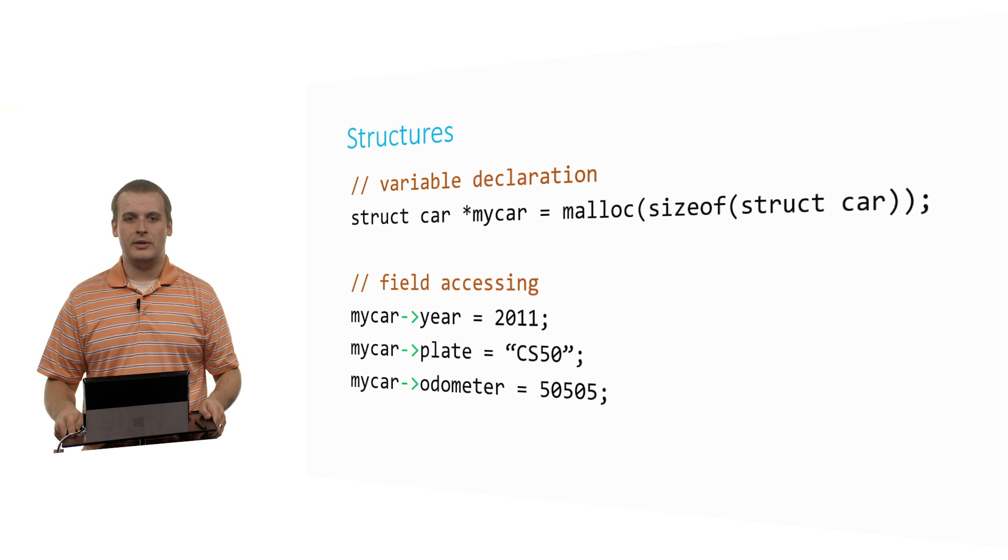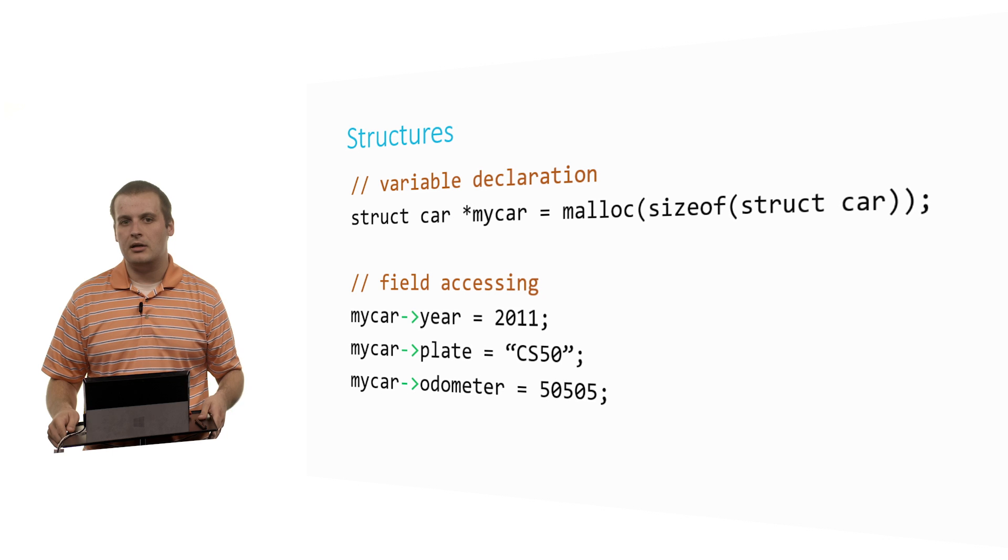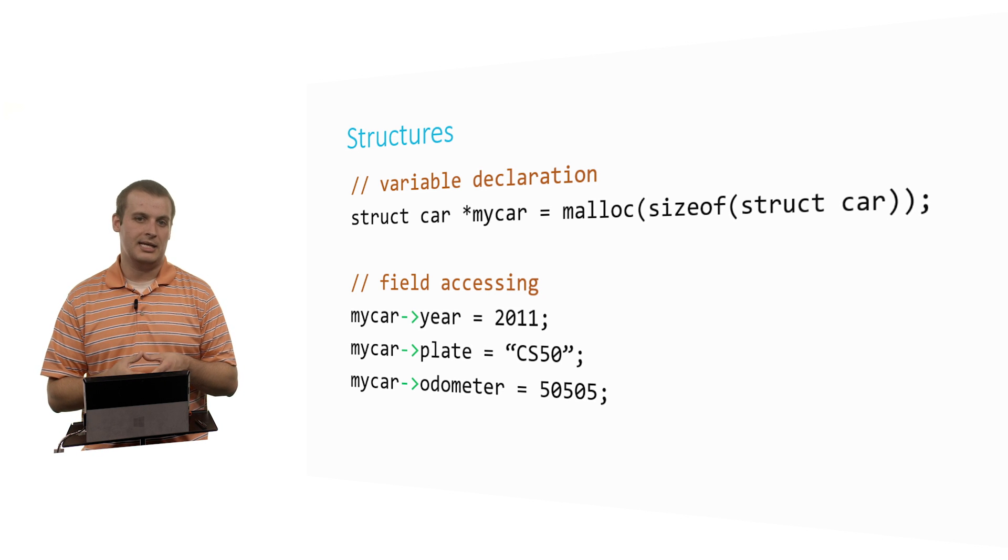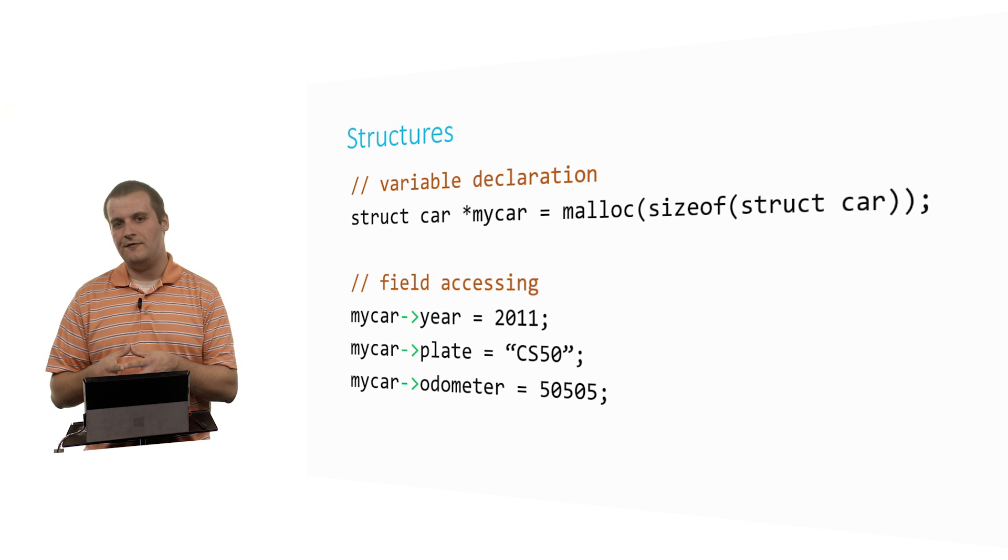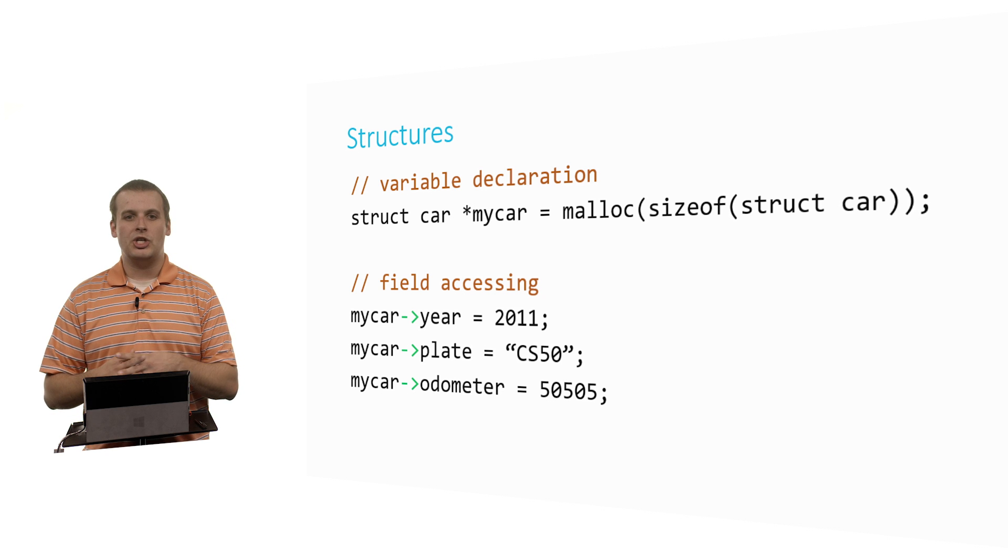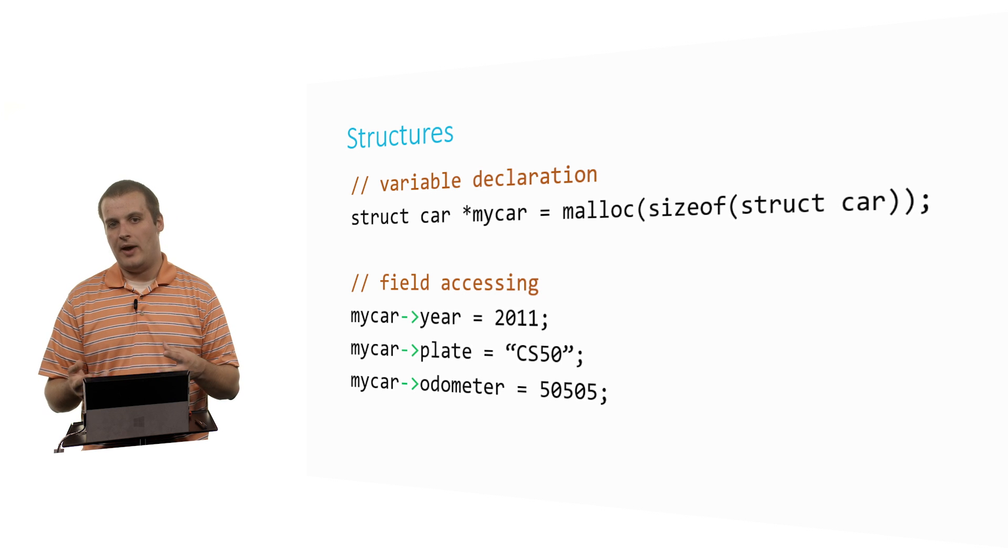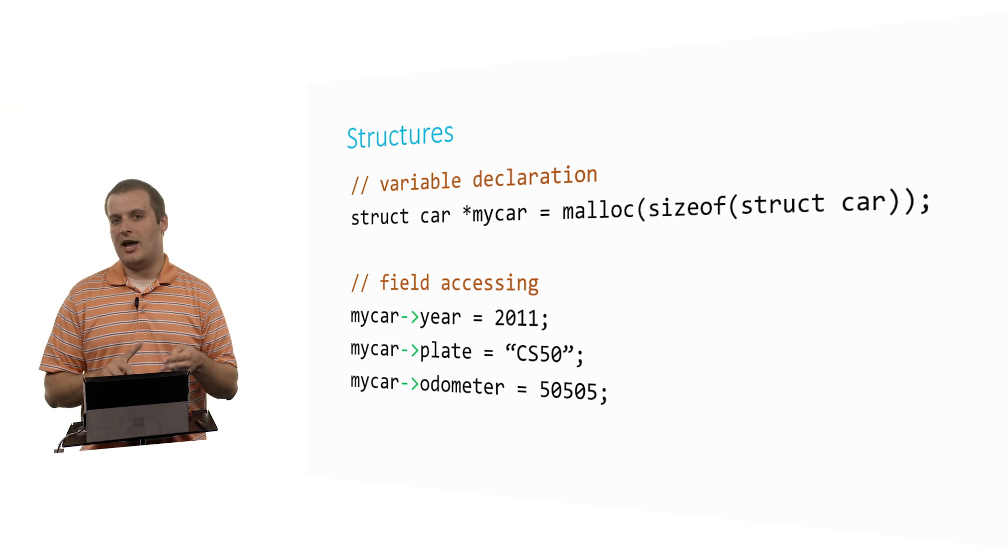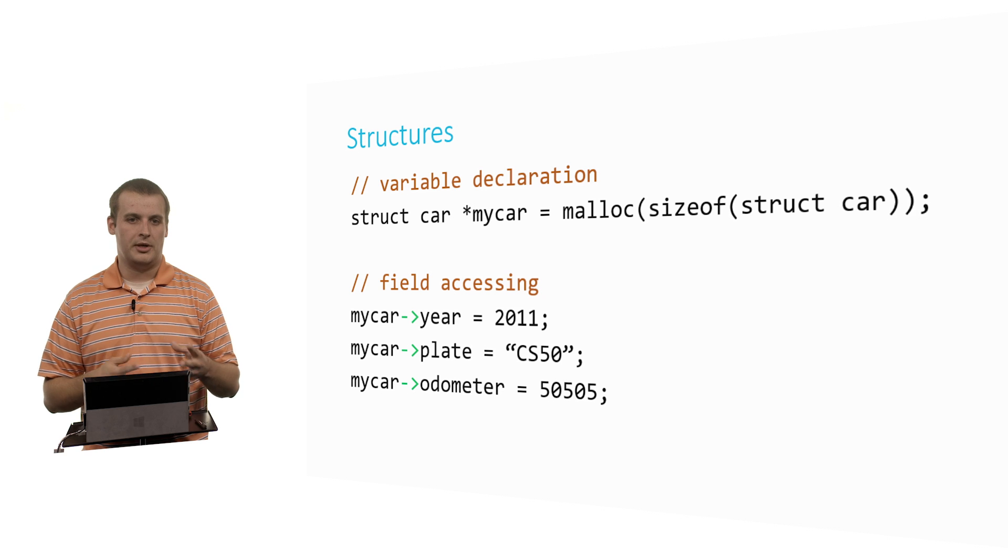Previously we had this sort of star, my car, dot, all this stuff. There's a lot going on there. But what we can instead do is this: my car arrow year equals 2011. Again, what's happening here? First I'm dereferencing my car, which again is a pointer here. Then after having dereferenced my car, I can then access the fields: year, plate, and odometer, just as I could before having first used star to dereference my car, and dot to access the field. So you can have structures, you can have pointers to structures, and you have ways to access the fields of those structures, whether you have pointers to them or the variables themselves, dot or arrow, depending on how the variable was declared. I'm Doug Lloyd. This is CS50.